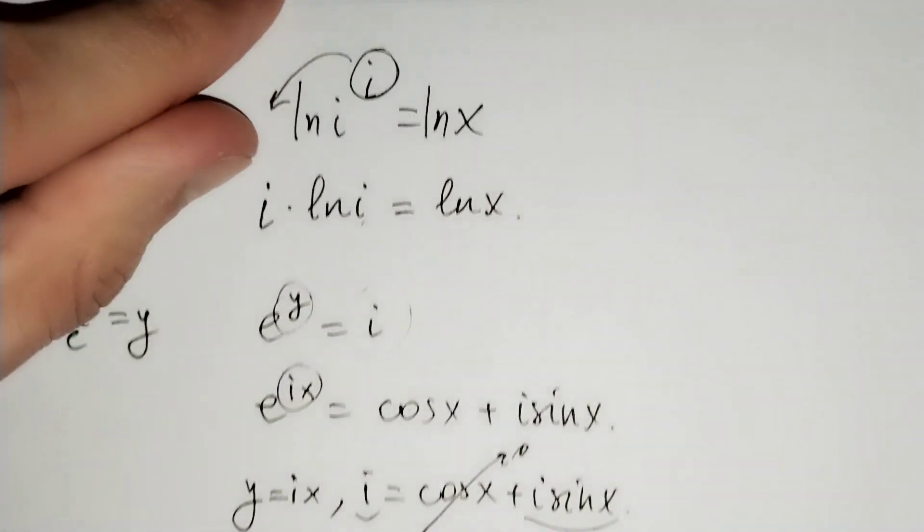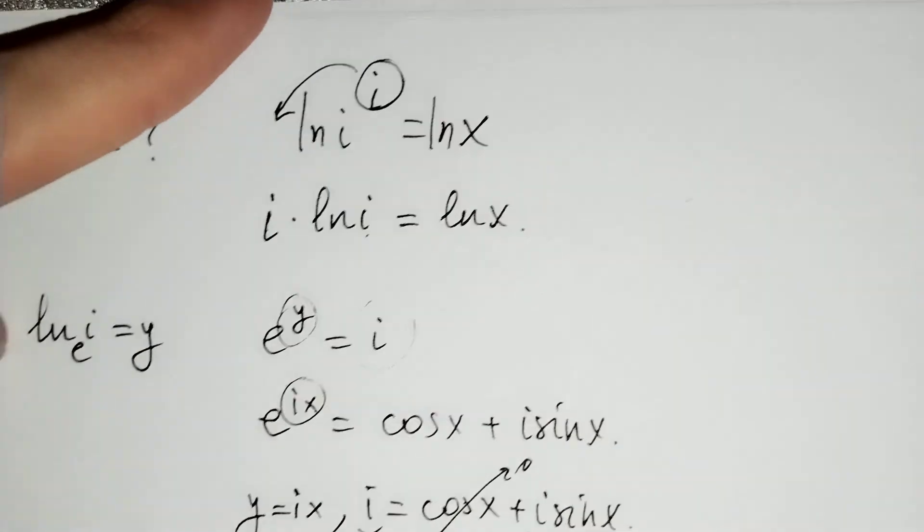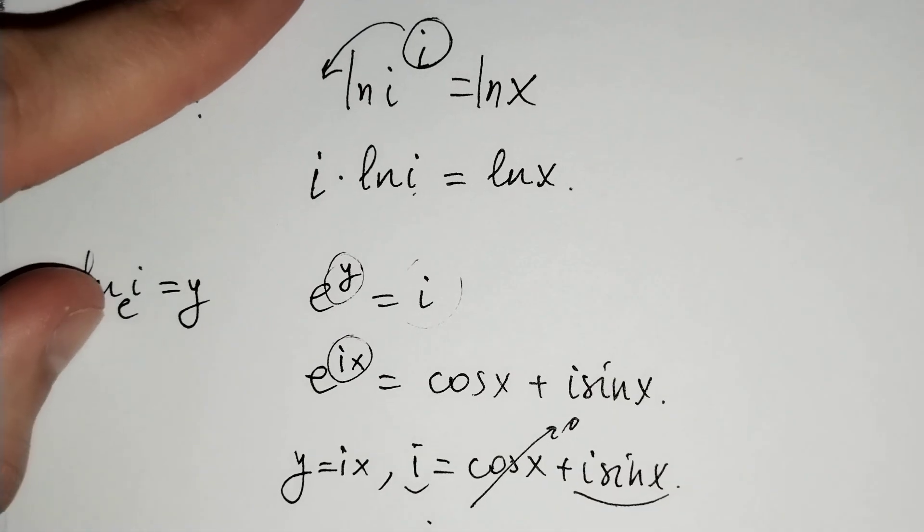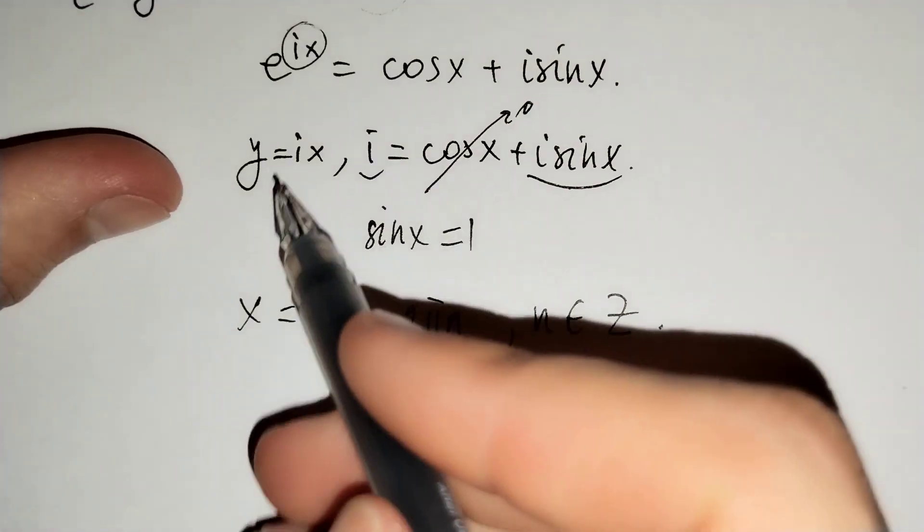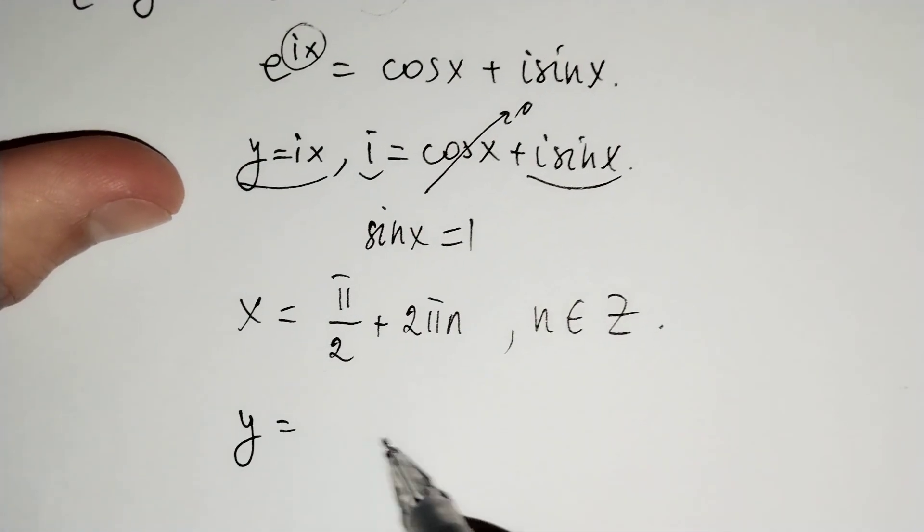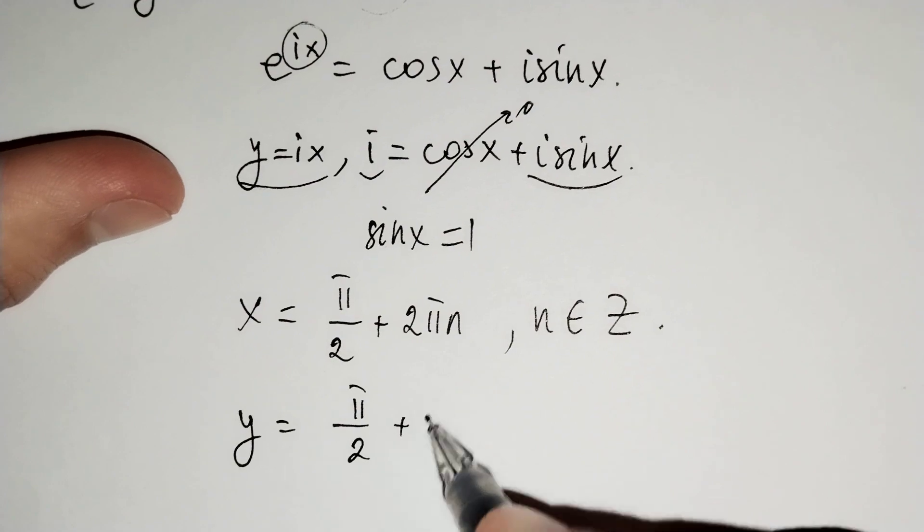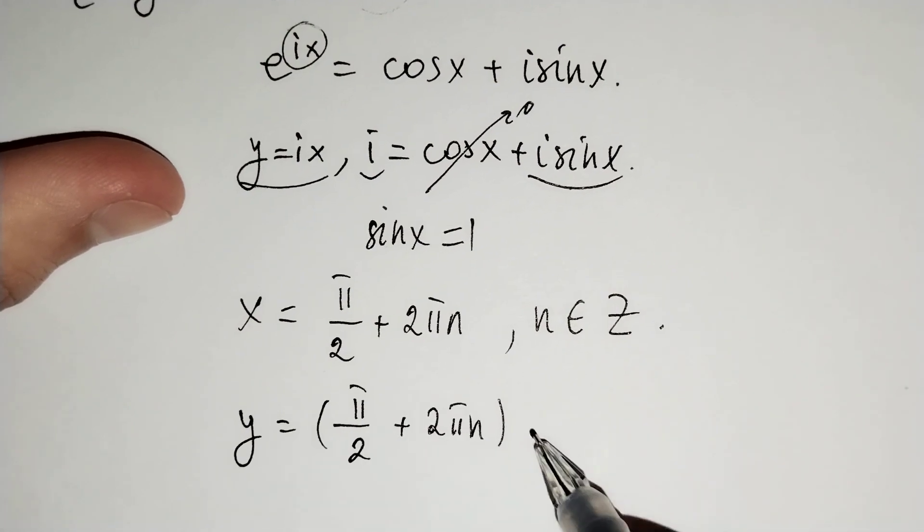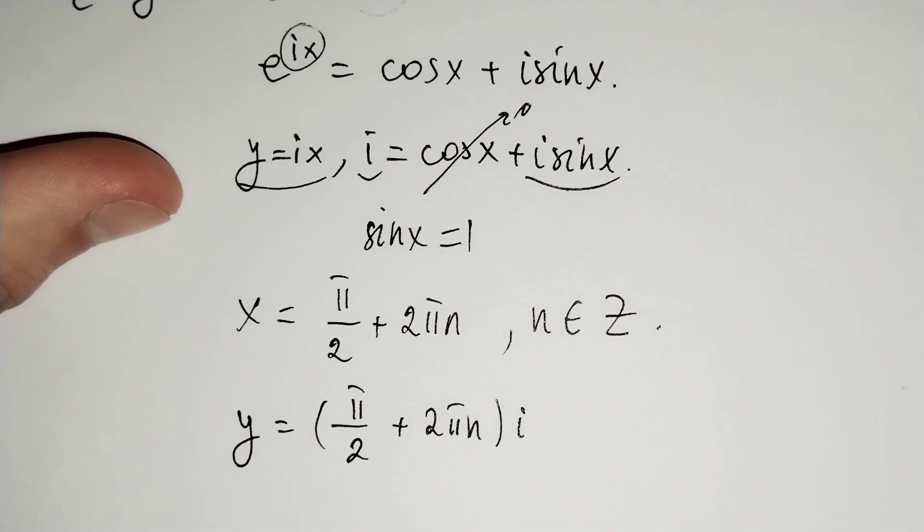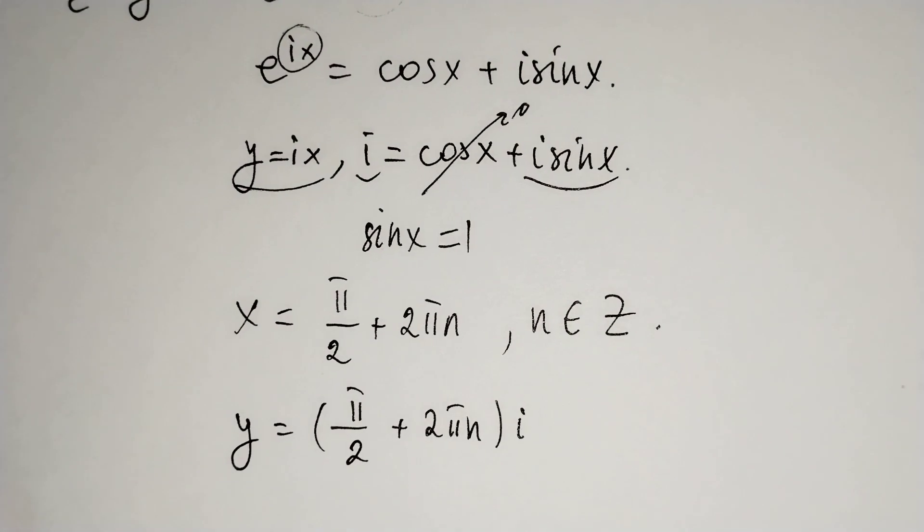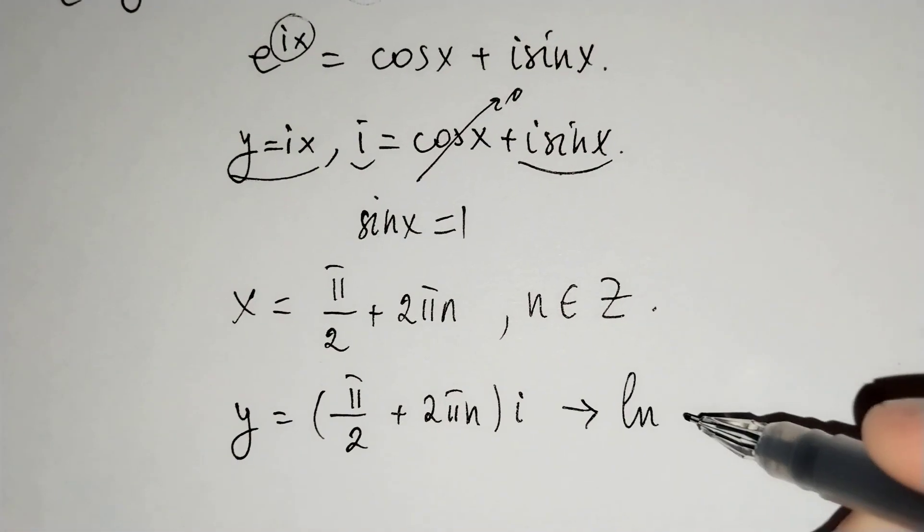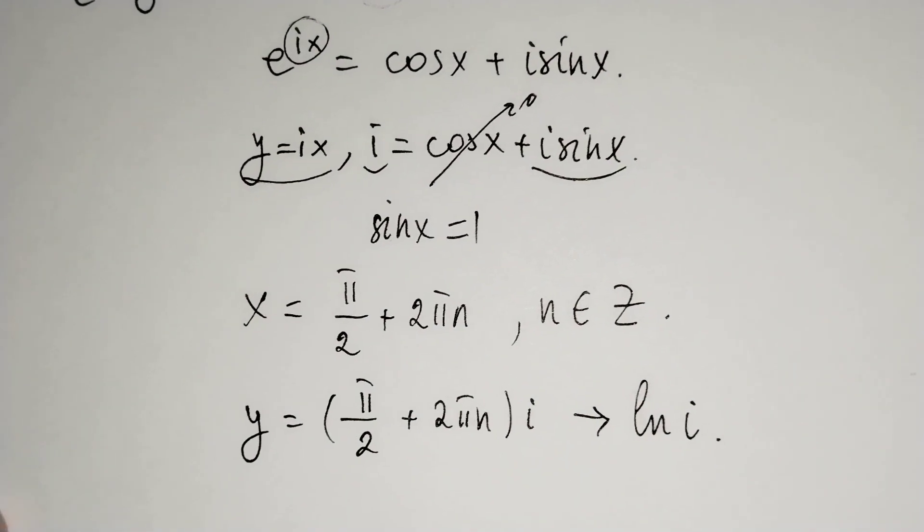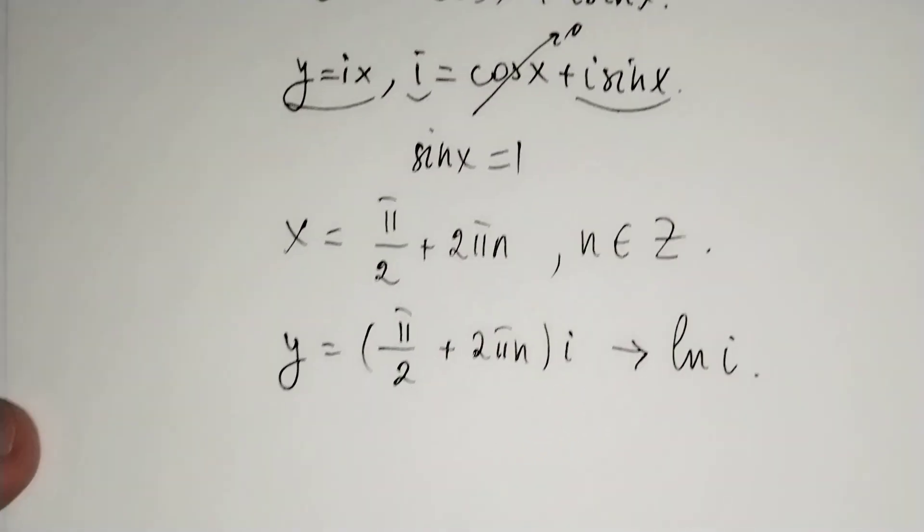We established that ln i equals y equals i times (pi over 2 plus 2 pi n). Now we should find ln x.